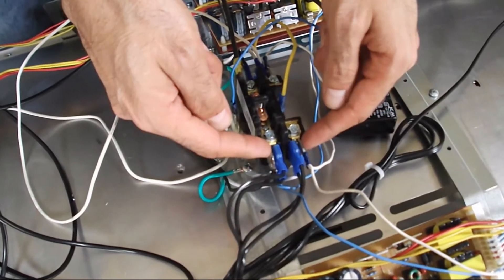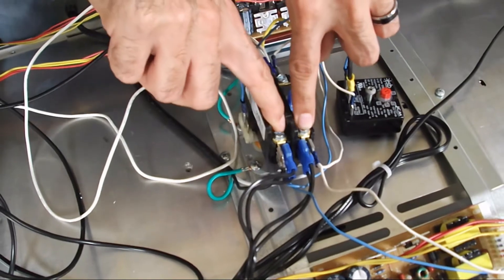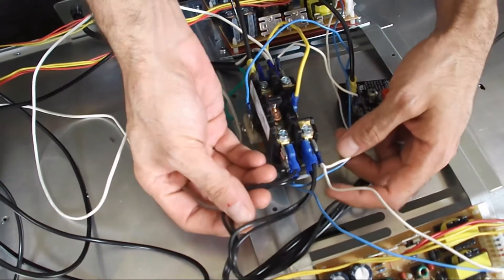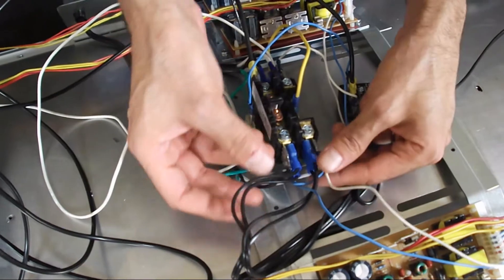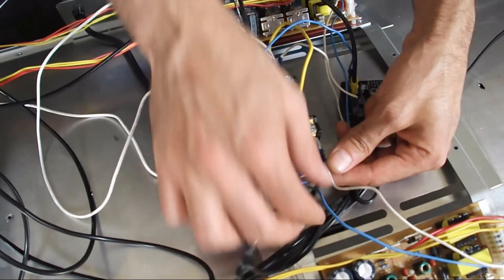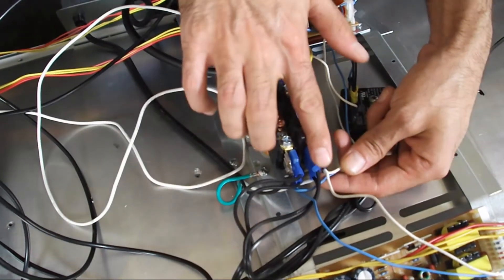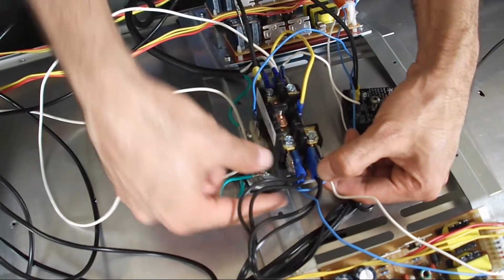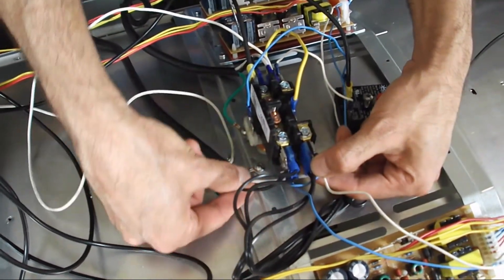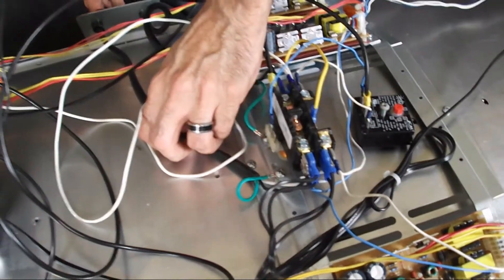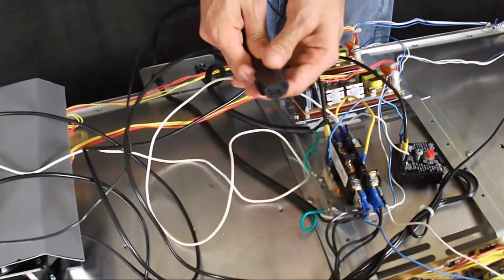And that means that the ballasts and your fans get power. These are all the hots for your ballasts and your fans, and these are all the neutrals for your ballasts and your fans. And as well, this is your power cord that ends up going down to your bench.